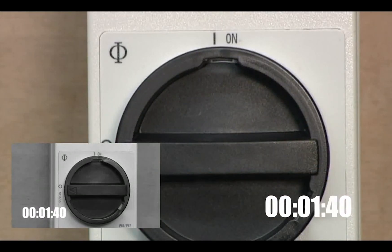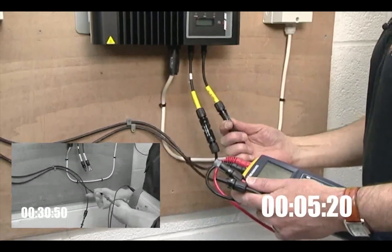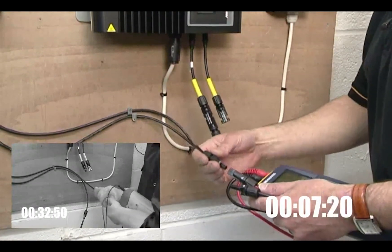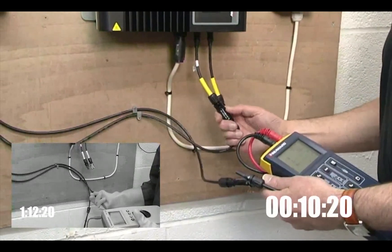The small screen shows the traditional method. In the main screen the PV150 is attached to the array.